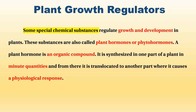These substances are also called plant hormones or phytohormones. If there is a chemical substance, if there is a phytohormone, then the plant is also called a phytohormone. The plant hormone is an organic compound. The organic compound is called a carbon-based molecule.